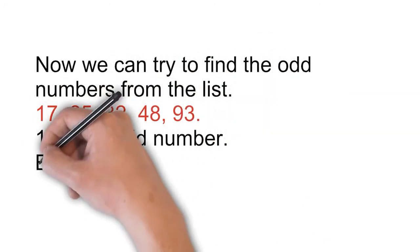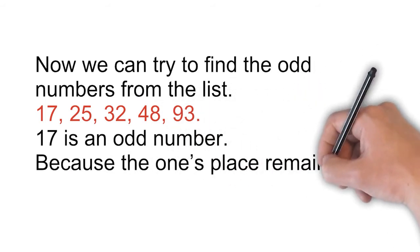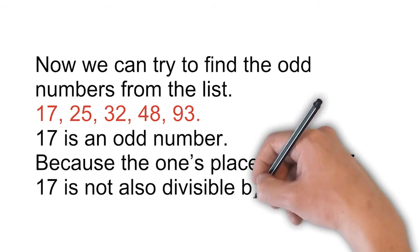17 is an odd number because the one's place has 7. 17 is also not divisible by 2.